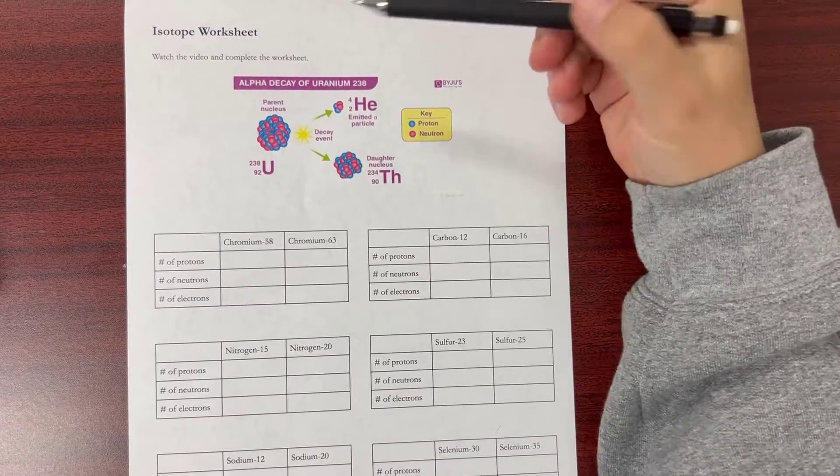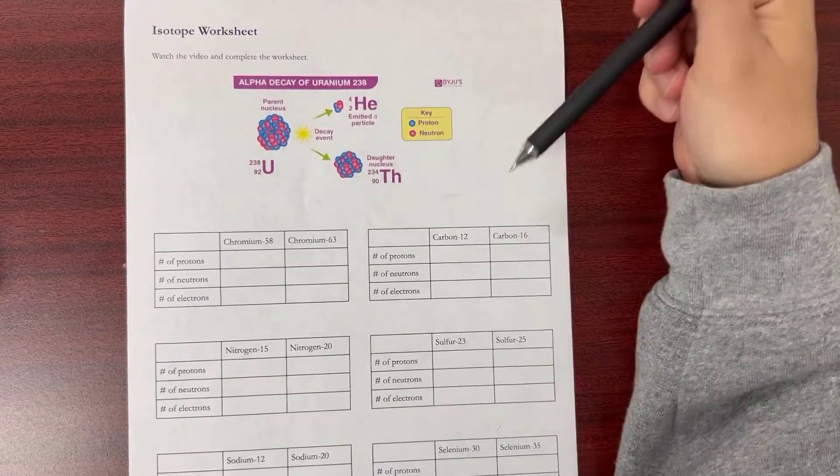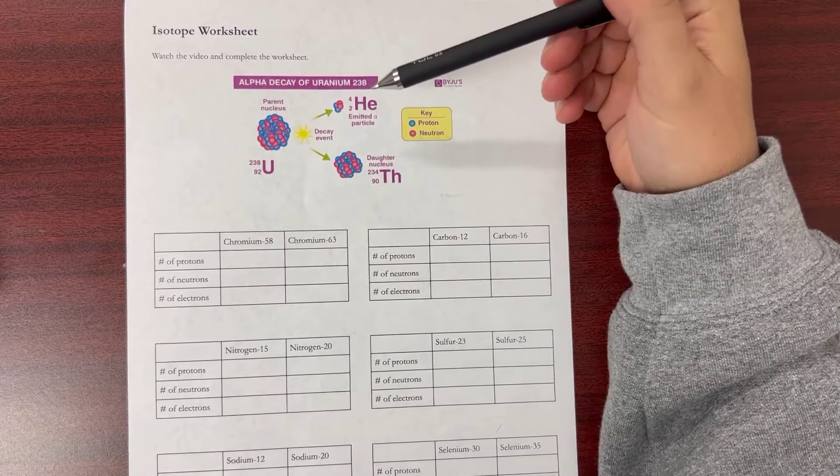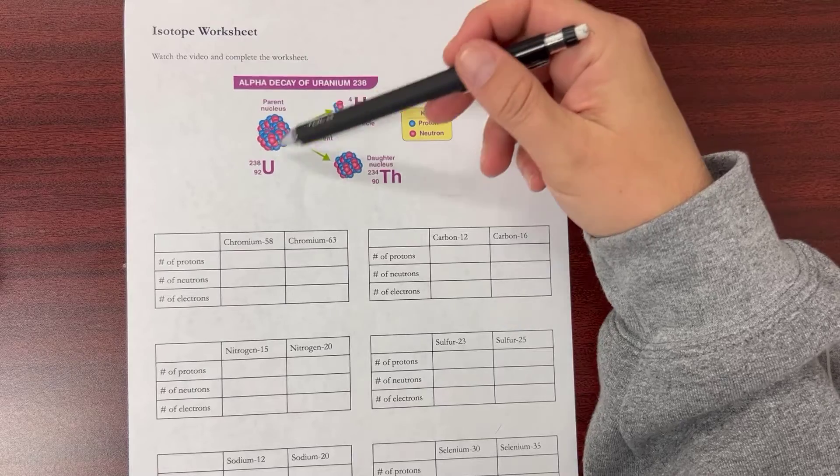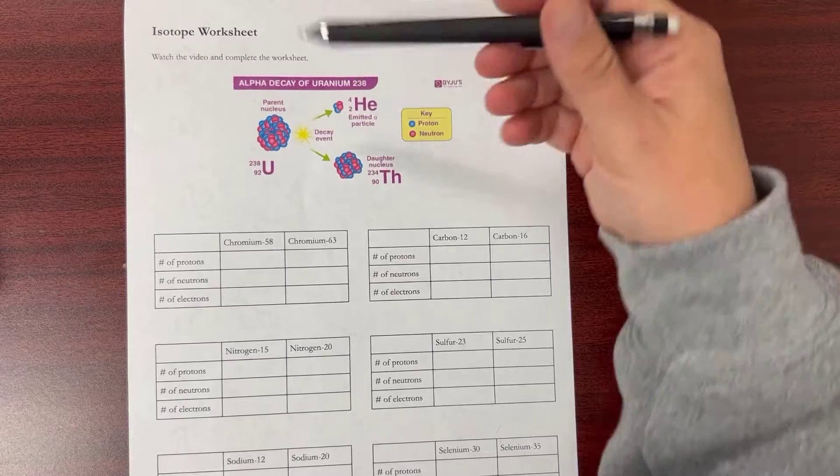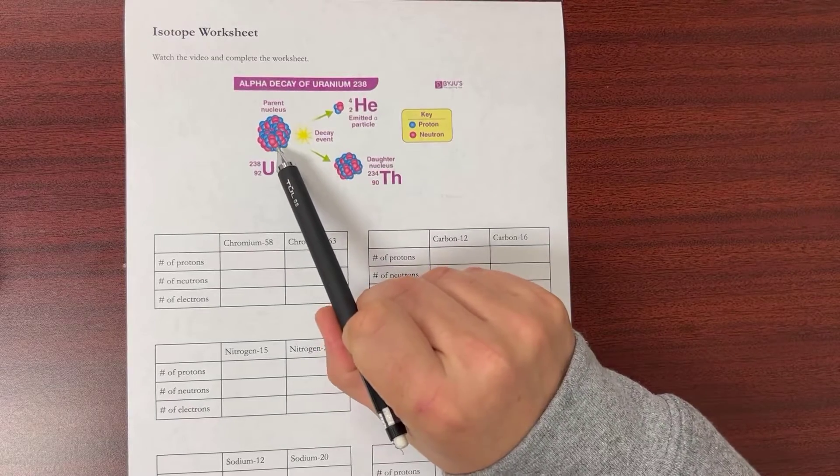Hello, I'm going to go over the isotope worksheet with you. What this is showing you is that there are different forms of elements that are more radioactive. In this image it shows a uranium